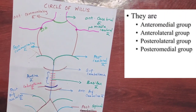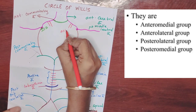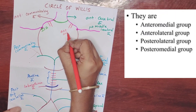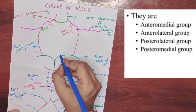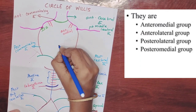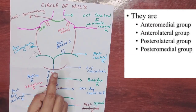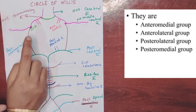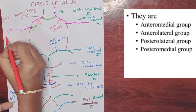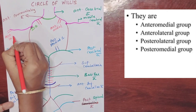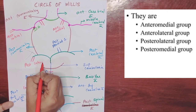In the anterior communicating artery, there are two groups of arteries which are called the anteromedial group. In the posterior cerebral artery, there is the anteromedial group. The posterior cerebral artery also gives rise to the anterolateral and posterolateral groups.